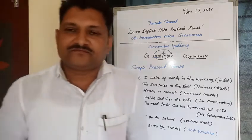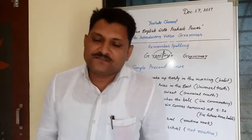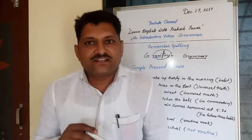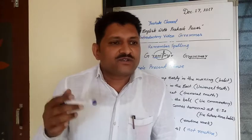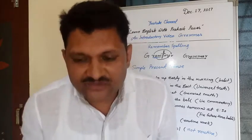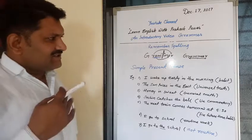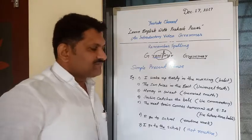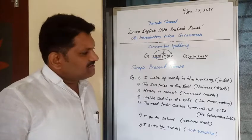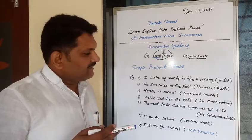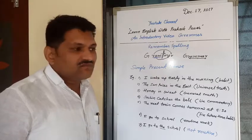Now let us come to tenses in English. In English there are three tenses, and these three tenses each have four sub-types, so there are a total of twelve tenses. First of all, we shall see simple present tense. Simple present tense is used to express one's habit, universal truth, general truth, live commentary, fixed future timetable, and routine work.